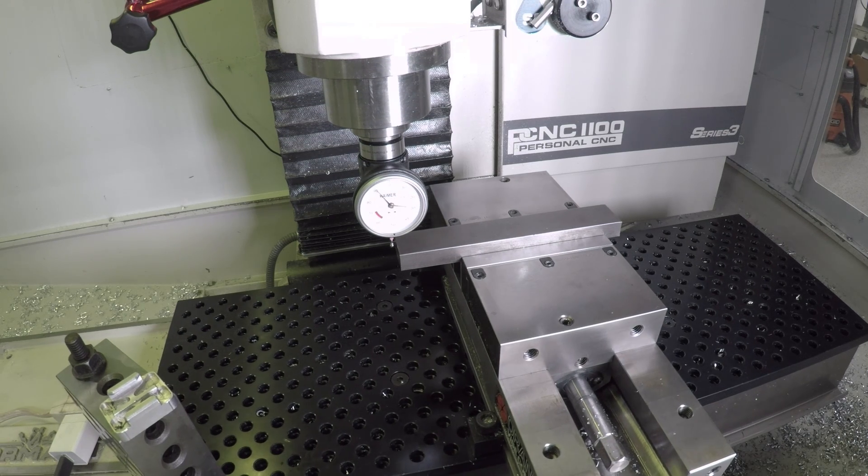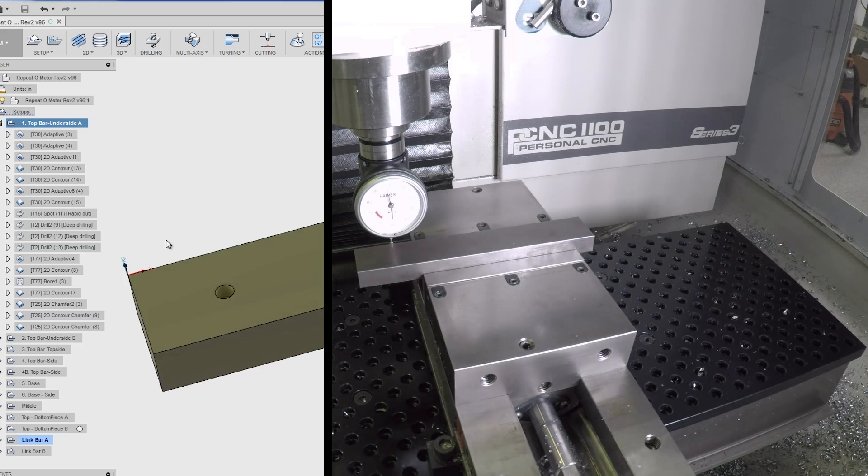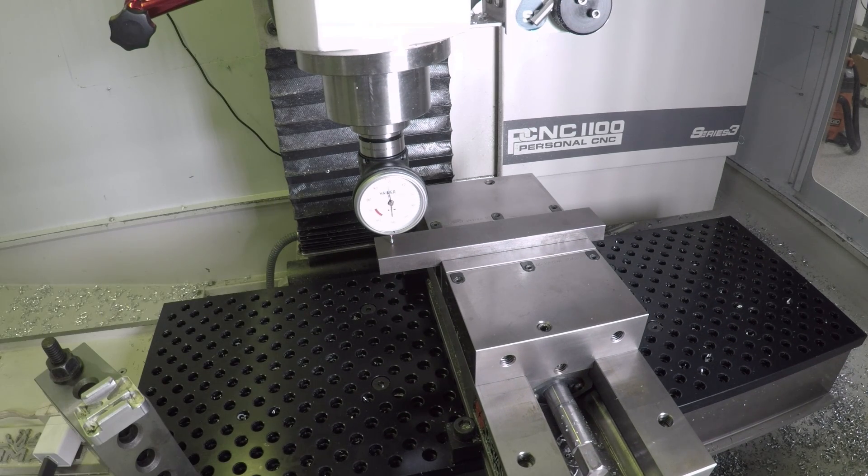Using our Haimer to find the work coordinate system, which is the back left corner, and Z-Zero on the top.